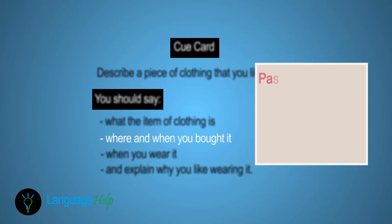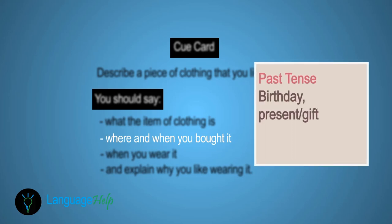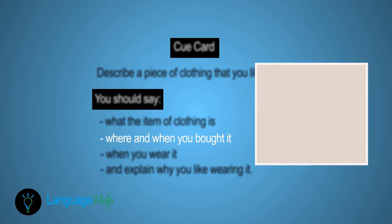The next cue asks us to talk about where and when we bought it. The first step is always to establish the tense — in this case, we'll use the past tense. We also need to think of occasions, shopping, friends, and family members. In our example, the item of clothing is a gift from someone who bought it for us.